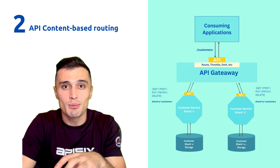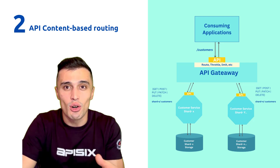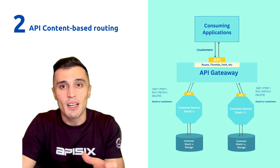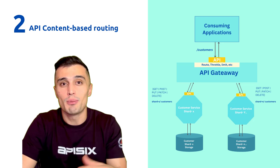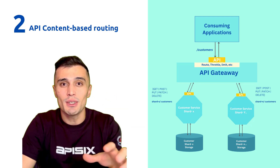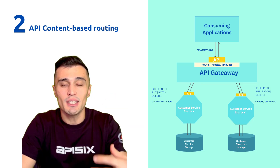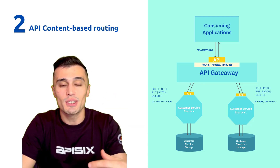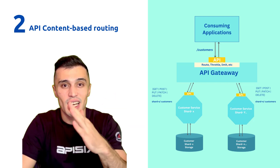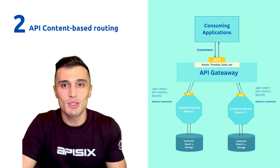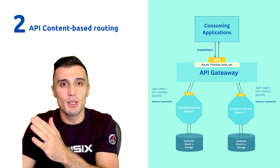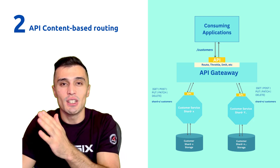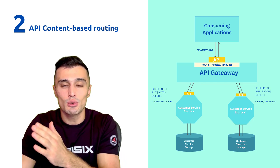You could then configure the API Gateway to route calls to the corresponding service based on a key obtained from the HTTP header or the payload. As you can see in the diagram, the API Gateway exposes a single /customer resource for multiple customer services, each with a different data store.